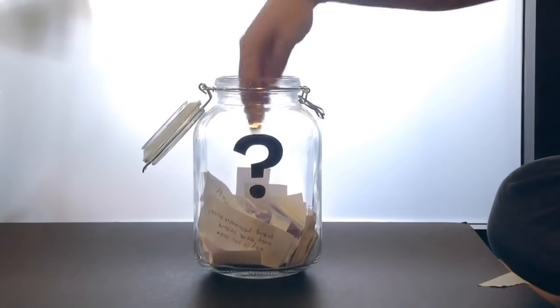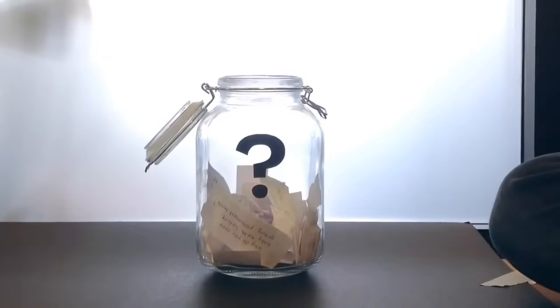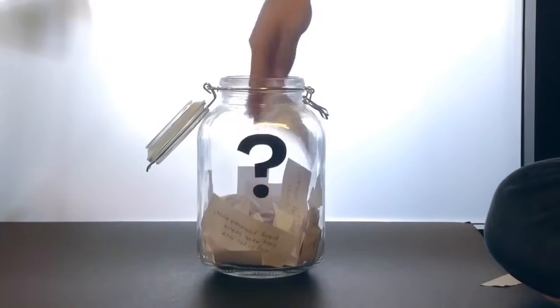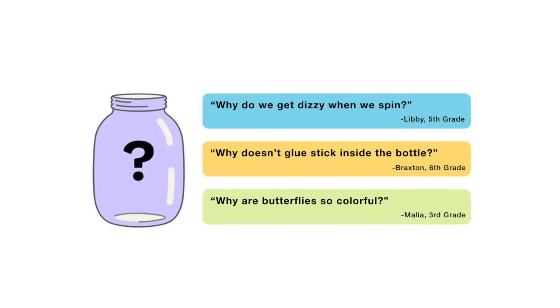When this video is done playing, you'll get to vote on one. You can choose from: why do we get dizzy when we spin, why doesn't glue stick inside the bottle, or why are butterflies so colorful? So submit your vote when the video is over. I want to hear from all of you watching. There are mysteries all around us. Stay curious and see you next week.